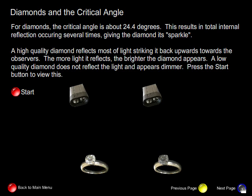For diamonds, the critical angle is much smaller. It's about 24.4 degrees. This results in total internal reflection occurring several times, giving the diamond its sparkle.